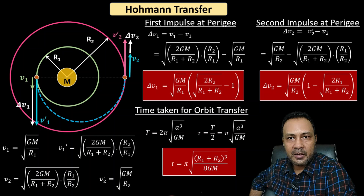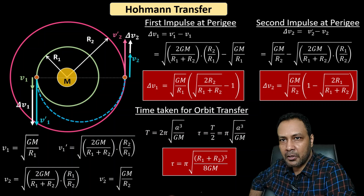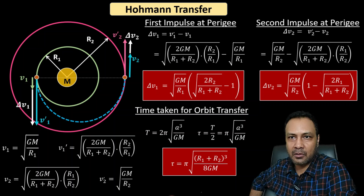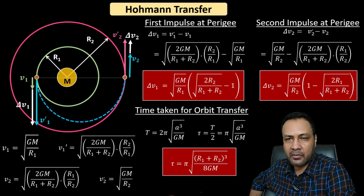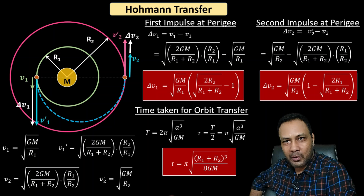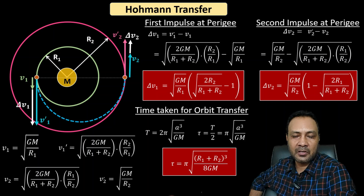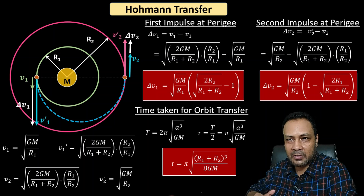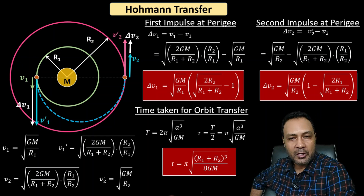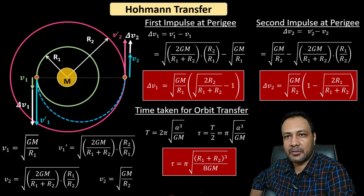This is how the Hohmann transfer maneuver works. Importantly, this is the most energy-efficient maneuver, but not the fastest. There are other maneuvers that take less time but are not energy efficient. For resource-constrained space programs, the Hohmann transfer is the right choice, while wealthier programs may prefer faster orbit transfers. This topic is very important for physics olympiads like PHO. Thank you for watching.